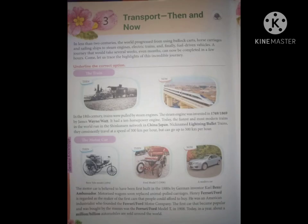Chapter number 3 is, transport then and now. In this, you learnt that, in less than 2 centuries, the world progressed from using bullock carts, horse carriages, steam engines, electric trains and finally, bullet trains. In this chapter, you need to learn from the book and watch the video properly.